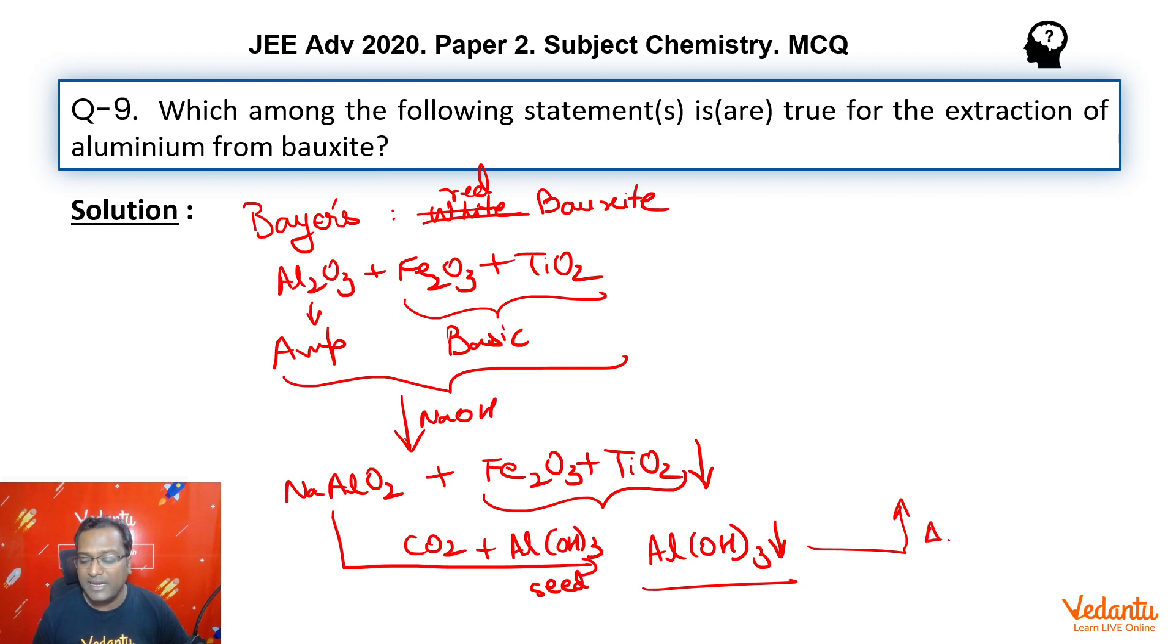This is then separated, dried, and ignited at high temperature to get pure alumina. What do we do ahead with this pure alumina? We take this pure alumina and add Na3AlF6 and CaF2 - cryolite and fluorospar.